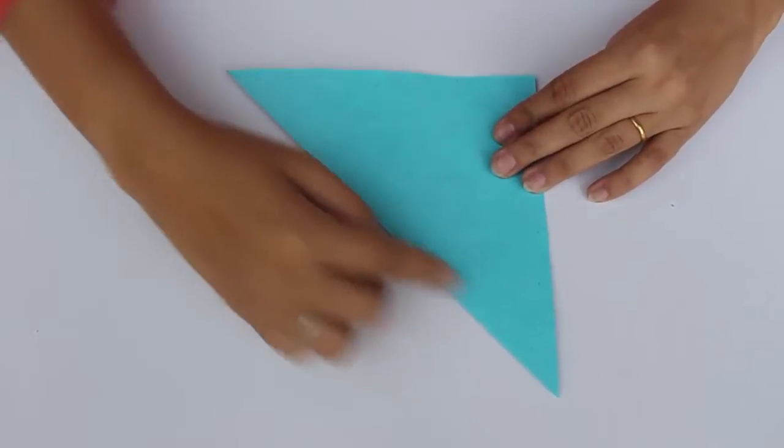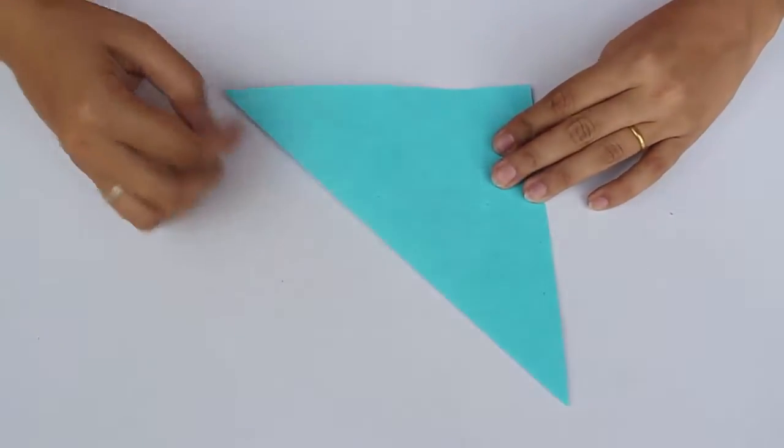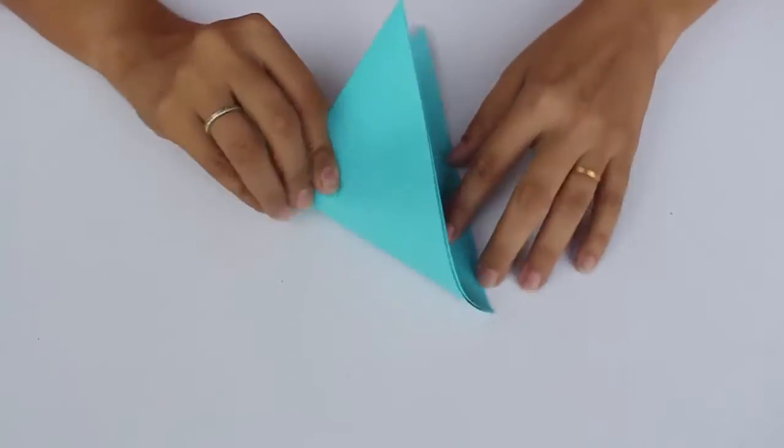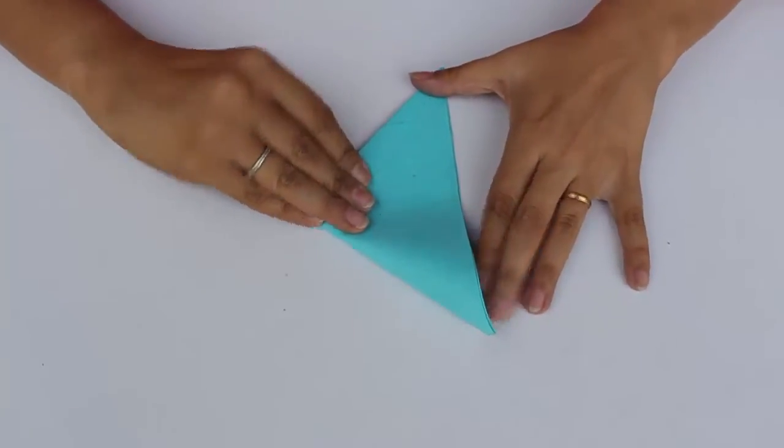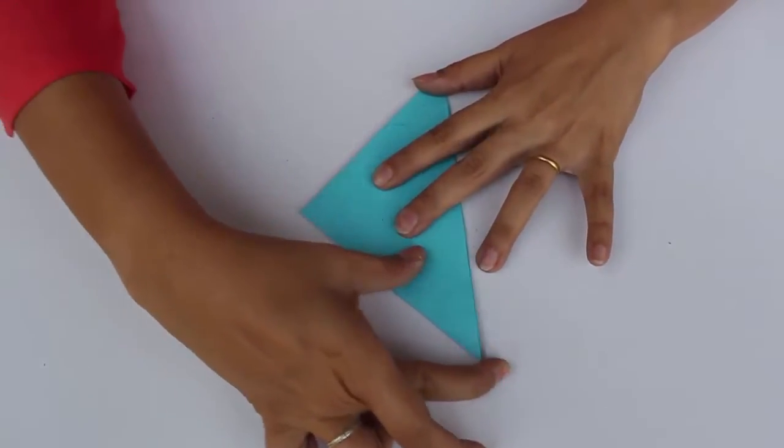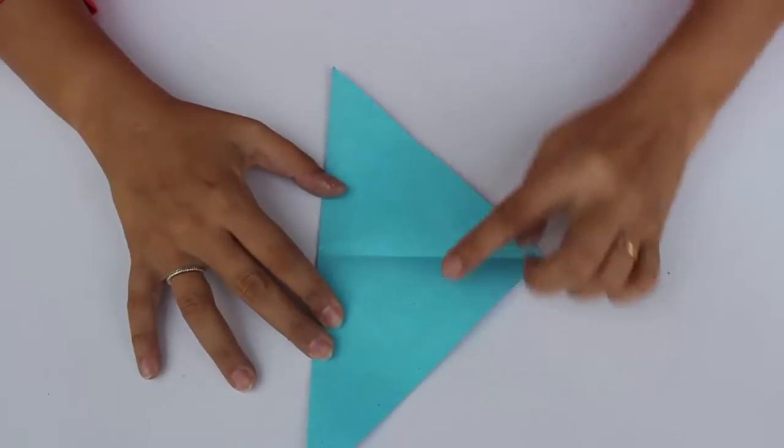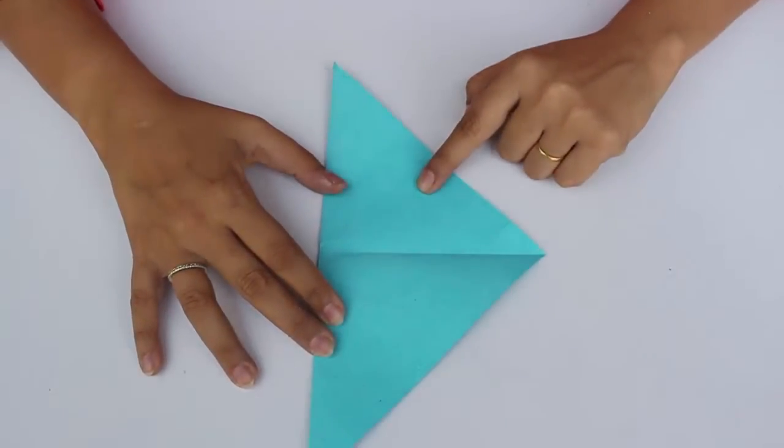If this is the right-angle triangle, fold the corners of the hypotenuse again like this. If you straighten this up, you will notice that these are two identical right-angle triangles.